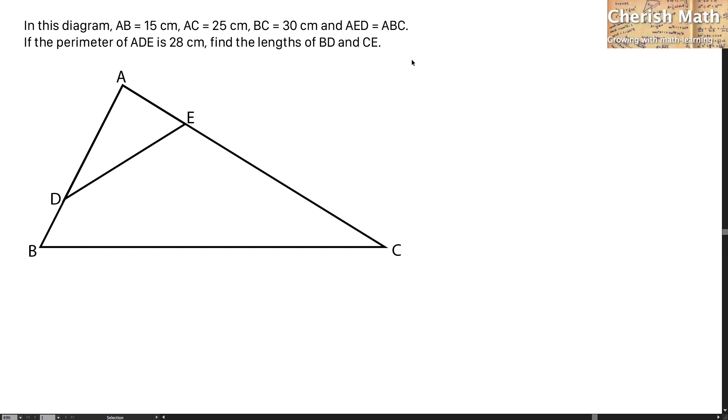Hi from Cherish Math. This is the question for today. In this diagram, AB equals 15 cm, AC equals 25 cm, BC equals 30 cm, and angle AED equals angle ABC. If the perimeter of ADE is 28 cm, find the lengths of BD and CE.